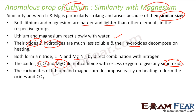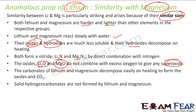The carbonates of lithium and magnesium both easily decompose on heating. Why? Because there is a difference in size — lithium and magnesium are small and carbonate is a big ion, so both lithium carbonate and magnesium carbonate are unstable and decompose on heating. Similarly, solid hydrogen carbonates are not formed for either lithium or magnesium — again a size issue.